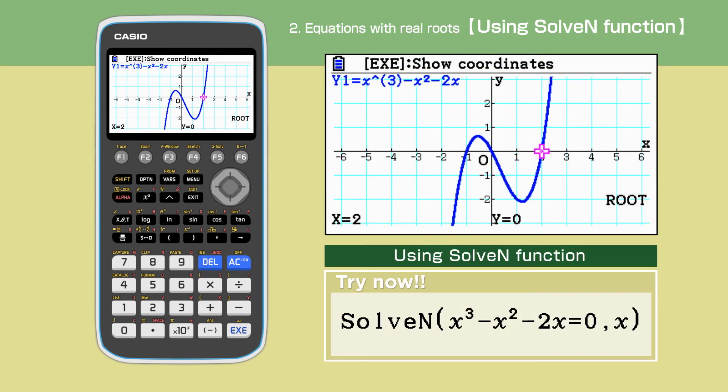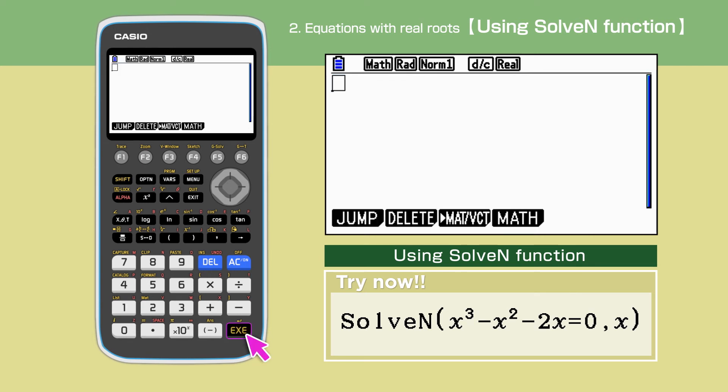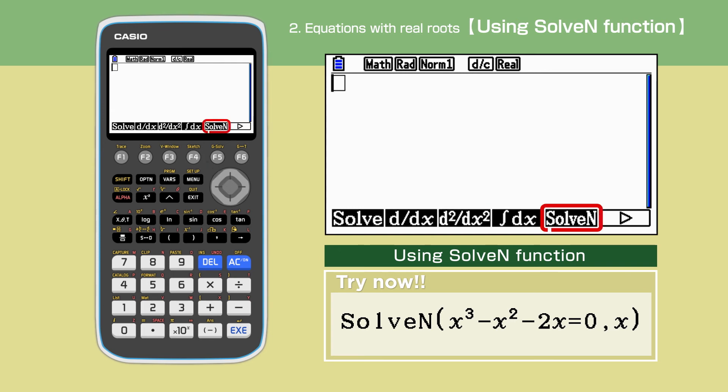Let's use the solve n function. Go back to the main menu and open the matrix function and press execute. Press option. Press F4 and display the calc menu. Press F5 to select solve n.